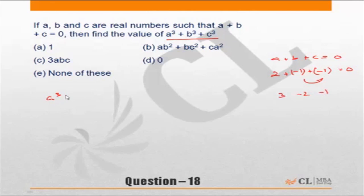a³+b³+c³. We have taken a to be 2, so 2³+(-1)³+(-1)³. This is 8-1-1, which equals 6. Put the values of a, b, c equal